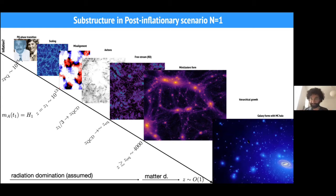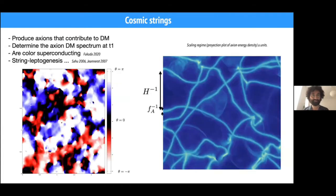Mini clusters form very fast around matter-radiation equality. From matter-radiation equality they suffer hierarchical formation and form clusters of mini clusters until today, where the galactic halo would be made of mini clusters, clusters of mini clusters, and some free axions in between. So in this storyline we have three elements of substructure which are extremely interesting.